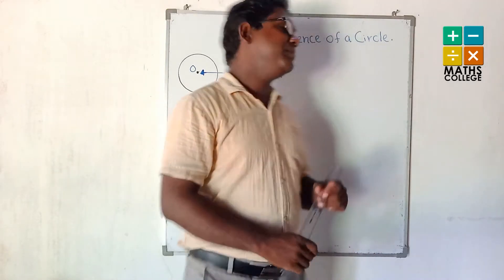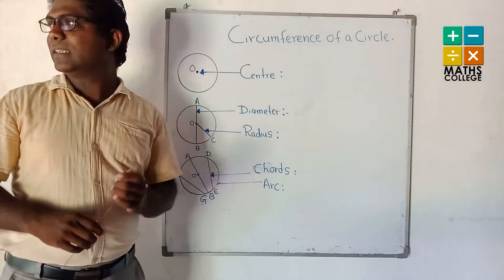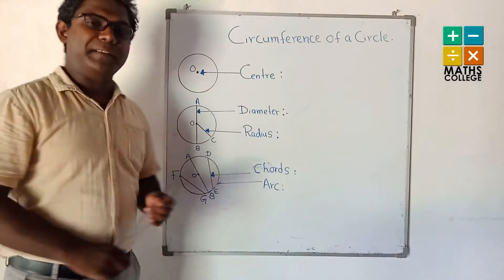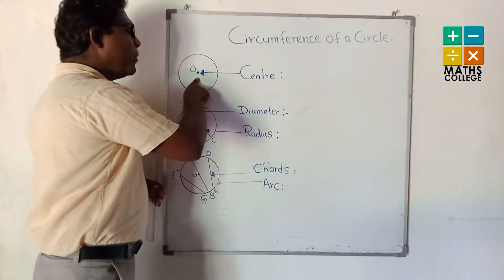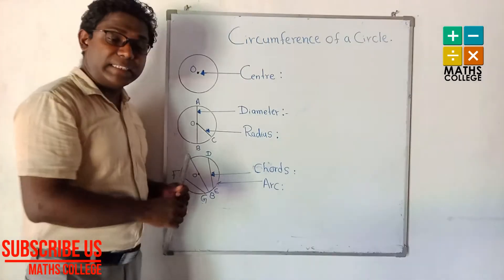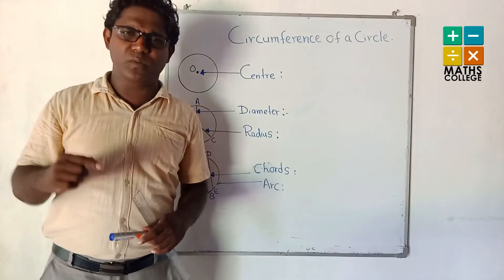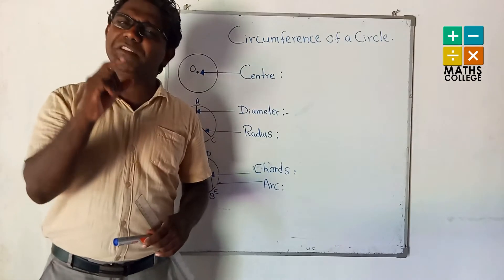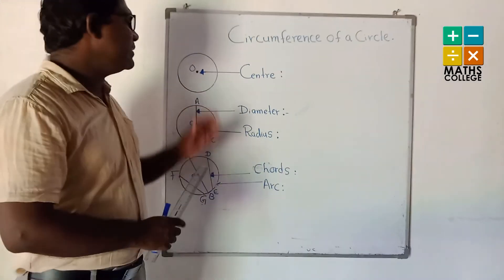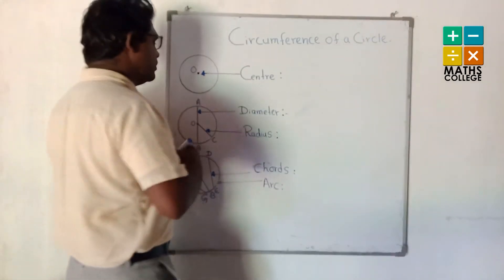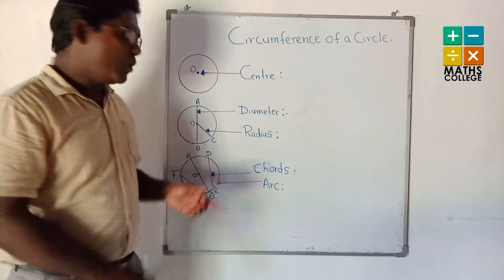Now I'm going to explain your previous knowledge of the parts of a circle. Look at the board very carefully. You can see the first element: center. Center means the midpoint of the circle. We call it center, and we also name it O, where O means origin — origin means midpoint.